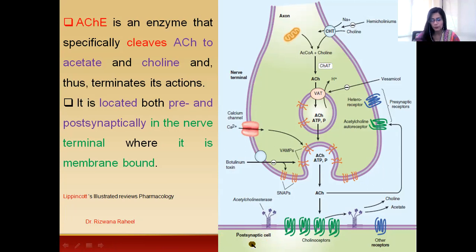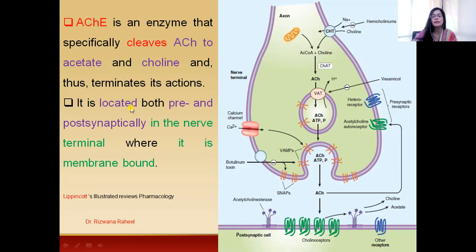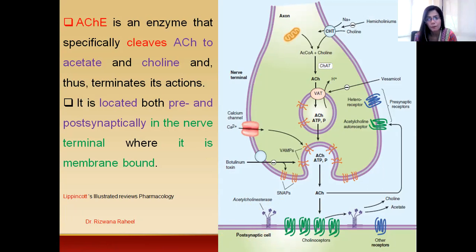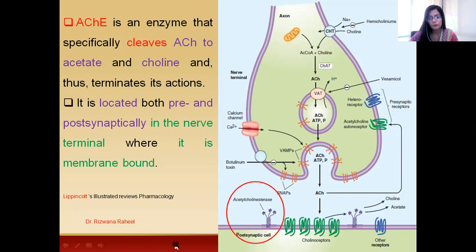These are actually membrane-bound enzymes. As you can see, acetylcholinesterase is not free — it is not moving freely in the synaptic space — but it is attached to the postsynaptic membrane. Whether present on the presynaptic membrane or the postsynaptic membrane, these enzymes are attached to the membrane and do not move freely in the synaptic space.